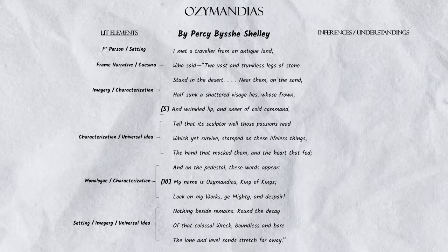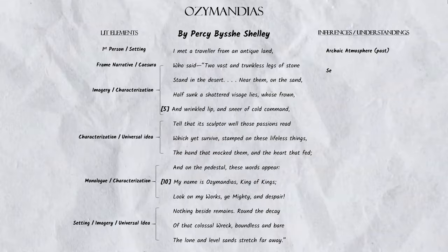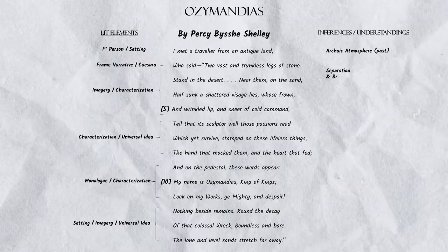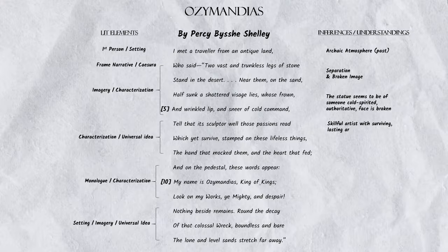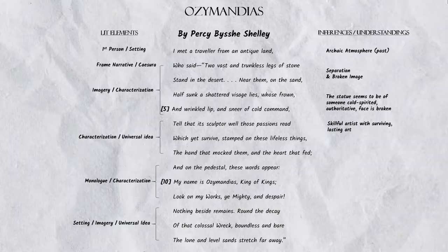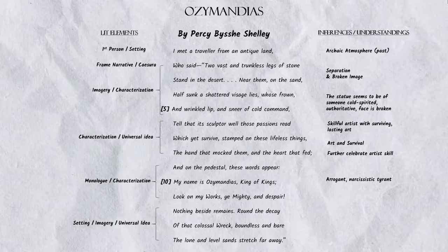Let me model what this looks like down the right-hand side of Ozymandias. The setting in line one sets up a shift to the past and creates a focus on an archaic atmosphere. The caesura in line two mimics the separation of the initial speaker into the frame narrative, and the caesura in line three symbolizes the broken image the second speaker is describing. The imagery in lines four through five highlights how the man the statue represents is cold-spirited and authoritative, and reiterates that the image itself is broken. Line six characterizes the sculptor as skillful and how his art has survived, which will later contrast with the leader whose kingdom has not. Lines six through seven introduce the universal ideas of art and survival, which are what this poem is about. Line eight continues to celebrate the artist's skill that was able to mock up the visage of the tyrant. Lines nine through eleven characterize Ozymandias as a narcissistic tyrant. And lines twelve through fourteen introduce the insight of desolation at the hands of time, and that very little lasts. These annotations will make writing topic sentences for any poetry essay incredibly easy, so stay tuned for that video.